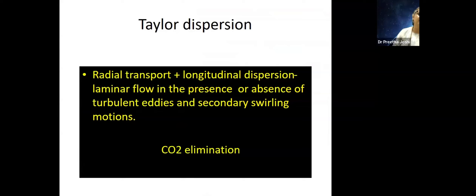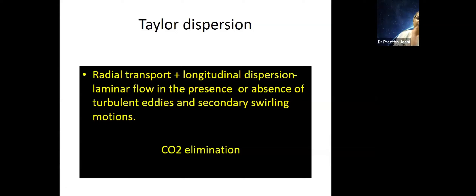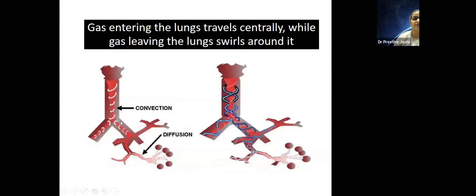Taylor dispersion is considered one of the main mechanisms — involving radial transport and longitudinal dispersion occurring simultaneously, enabling efficient CO2 elimination. This does not happen in conventional ventilation: even if you go from a rate of 30 to 60 you do not get the same rate of CO2 decrease as when you set the amplitude at 40–50 on a high-frequency ventilator. In Taylor dispersion, gas enters as a main jet and CO2 swirls out around it — so the constant MAP does not affect CO2 elimination.